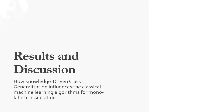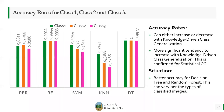As we specified our methods, let's now move to our results. When analyzing the general knowledge-driven class generalization, we found that accuracy rates can either increase or decrease with knowledge-driven class generalization, and that there is a more significant tendency to increase. This fact is confirmed by statistical analysis. Better accuracy rates are obtained for the classification of animals for Decision Tree and Random Forest, though this can vary by the types of classified images.